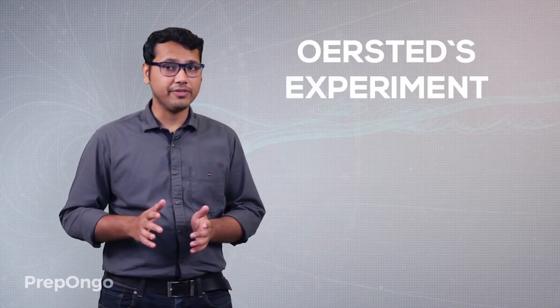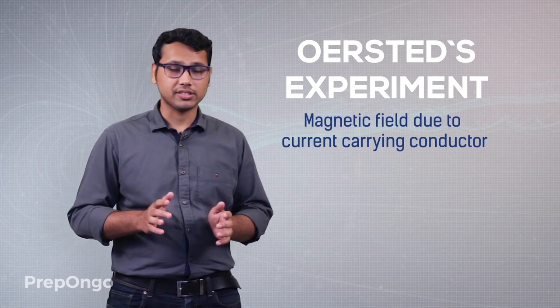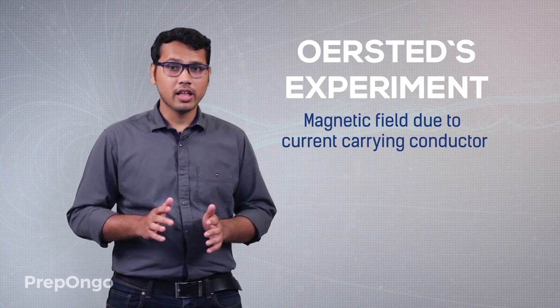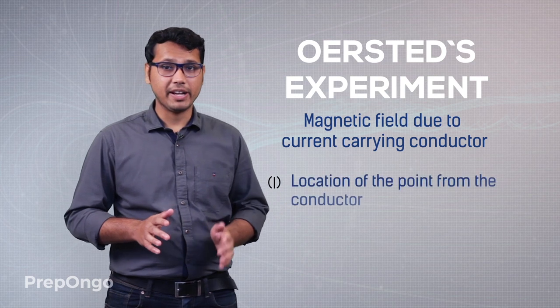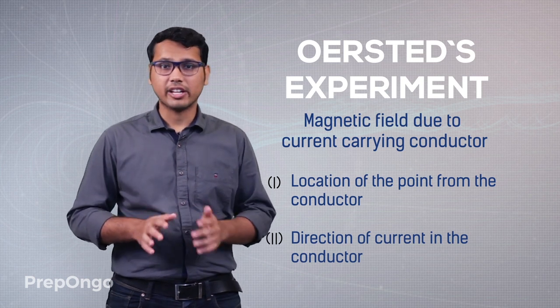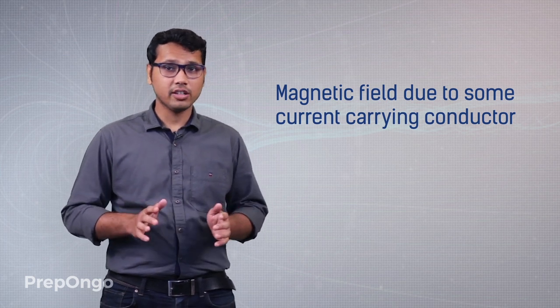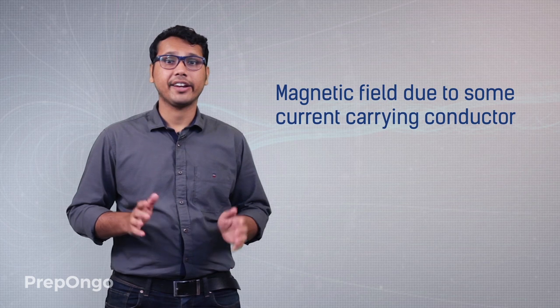Hello everyone. In the last video we had studied about Oersted's experiment, and we had seen that the magnetic field due to some current-carrying conductor depends on various factors. In this video we will try to find out the magnetic field due to some symmetric current-carrying conductors. These are conductors which we use very frequently, so we should know the magnetic field produced by them.